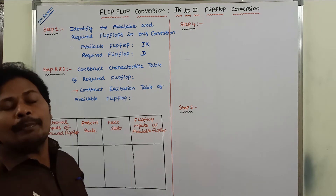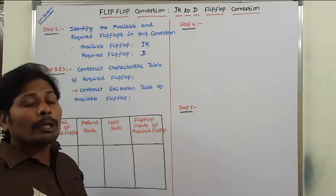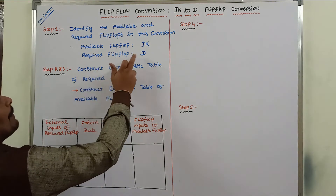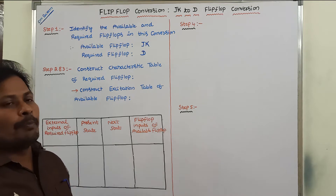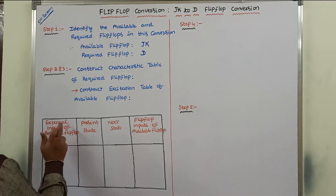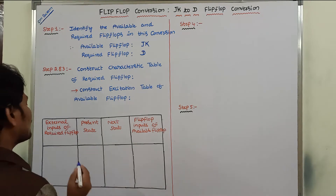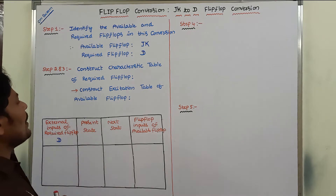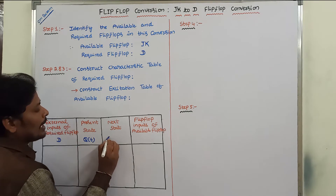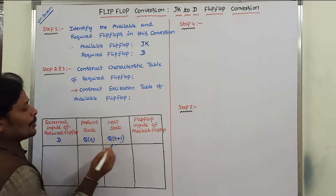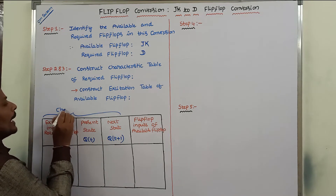Then go for the second and third steps. In the second step, construct the characteristic table for the required flip-flop — here, the D flip-flop. In the characteristic table, we include the external inputs of the required flip-flop, which is D, along with the present state Q(T) and next state Q(T+1). These are the first three columns of the characteristic table.